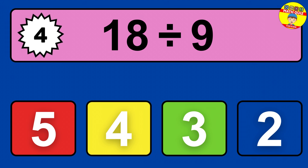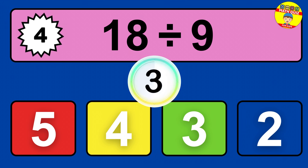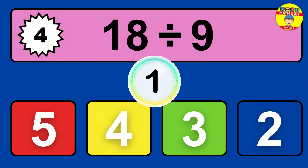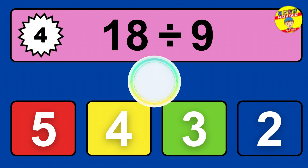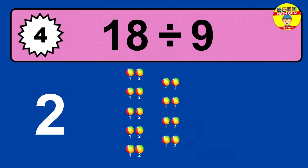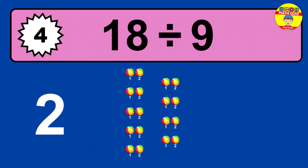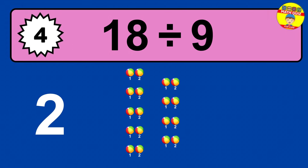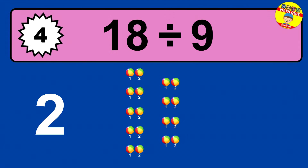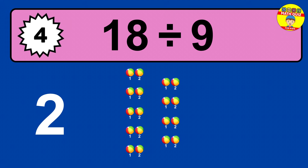18 divided by 9 — time to think. Let's go to the solution. Divide the number 18 by 9. Each group contains 9 units, so dividing 18 by 9 results in 2 equal groups. Thus, the result is 18 divided by 9 equals 2.